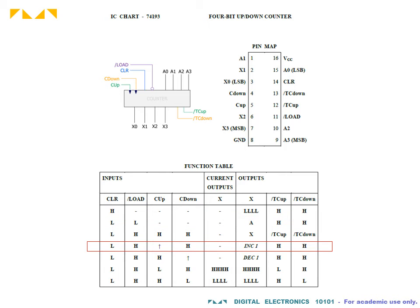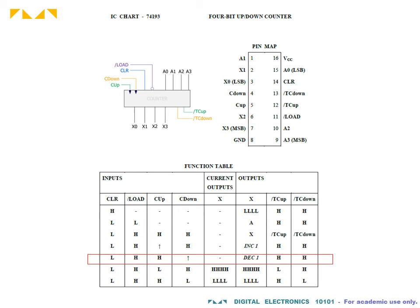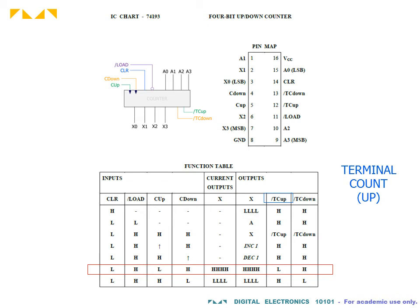The IC has separate rising edge triggers for count up and count down. Finally, in order to permit cascading, it has an active low output when it attains its highest count containing all 1s.